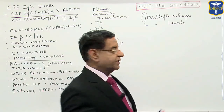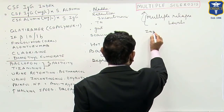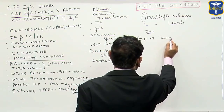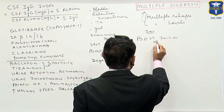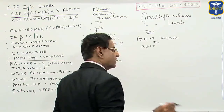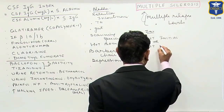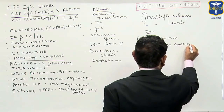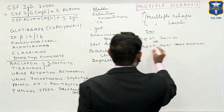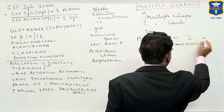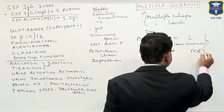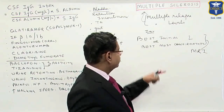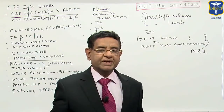How do we investigate this patient? The best initial test and the most confirmatory test is MRI. There is no role for CT scan in diagnosing a case of multiple sclerosis. Whether best initial or most confirmatory, MRI is the answer.